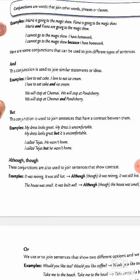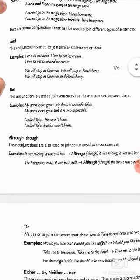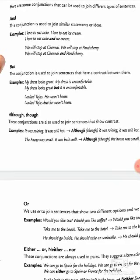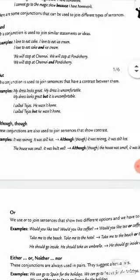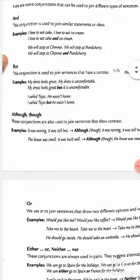Although and though, these conjunctions are used to join sentences that show contrast. Although it was raining, it was still hot. Although the house was small, it was built well. These conjunctions show contrast, opposite ideas.